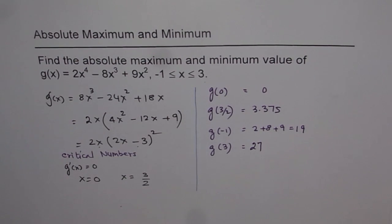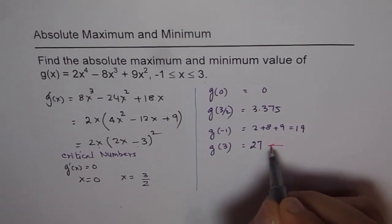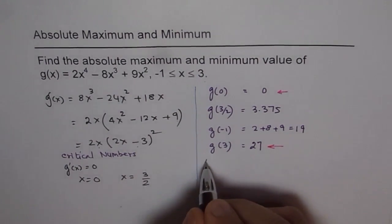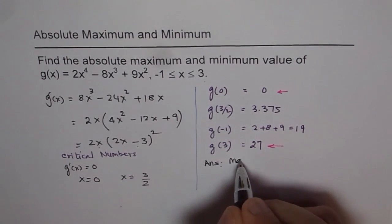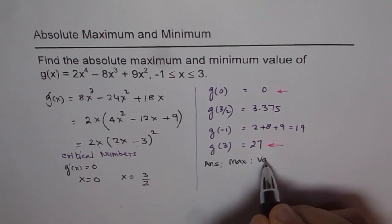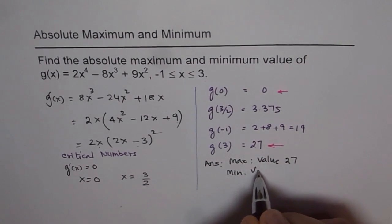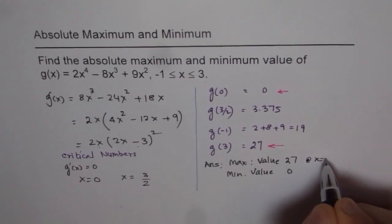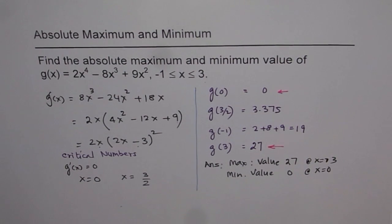So we have the values at the critical numbers and at the endpoints. When you compare these values, the maximum is at x = 3 and the minimum is at x = 0. The maximum value is 27 and the minimum value is 0. That is how we solve this question.